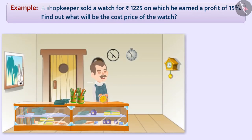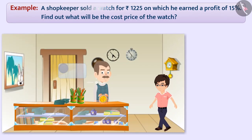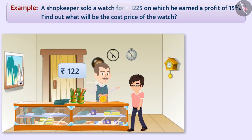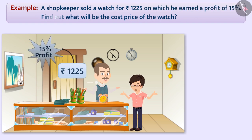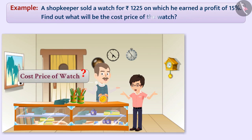Next example: A shopkeeper sold a watch for Rs 1225, on which he earned a profit of 15%. Find out what will be the cost price of the watch. Stop this video and try to find the answer.